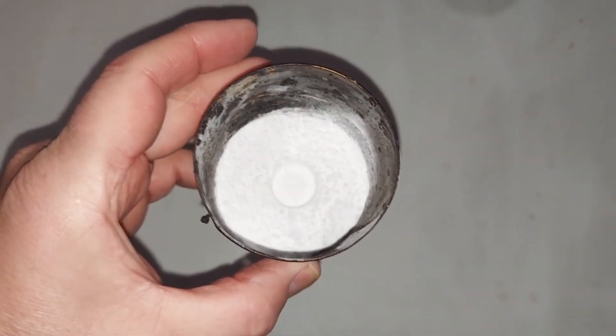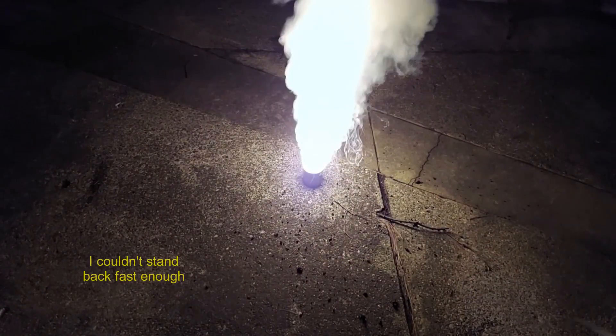Take two, powdered sugar and potassium chlorate. Adding sulfuric acid to the powdered sugar mix. All right, there you go. That worked really well.